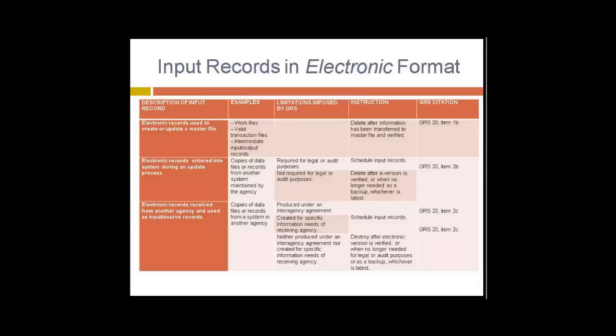A question came in from the chat: would GRS 20 item 2A4 apply to civilian personnel records that have been scanned into EOPS? That's something we're taking under consideration. The preference is for that question to be sent via email to the GRS team email address so we can take it under consideration as a team and respond directly. Those kinds of questions may also become the source of further revisions to the FAQs or general guidance related to GRS 1 types of records.